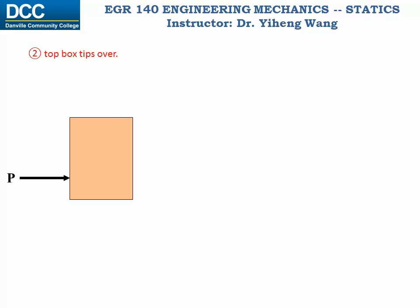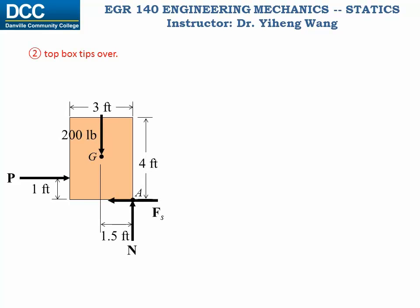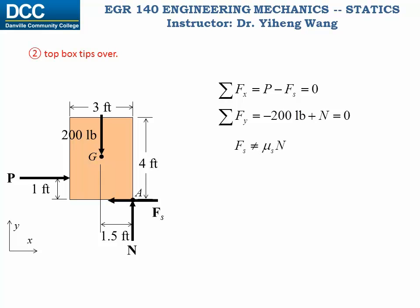For the second situation — top box tips over — we again sketch the free body diagram of the top box. Now the location of N is important: for tipping to occur, the normal force must be placed at the edge of the box, 1.5 feet from the center. The force equilibrium equations are less useful here because Fs does not necessarily equal μs·N unless slipping is also about to happen. The useful equation is the moment equilibrium: ΣM_A = −P·(1 ft) + 200·(1.5 ft) = 0, giving P = 300 pounds.